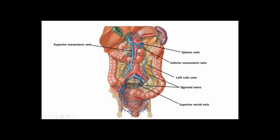The superior mesenteric vein has jejunal, ileal, ileocolic, right colic, and middle colic veins — all the same names — draining into it. When the splenic vein meets the superior mesenteric vein, that creates the hepatic portal vein, which carries all the blood from the GI tract to the liver to be filtered before joining the caval system. There is no celiac vein; most celiac branches drain directly to the liver. The right and left gastric veins join the hepatic portal vein directly.